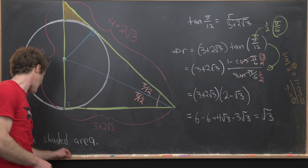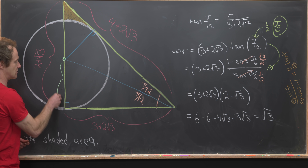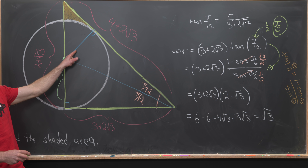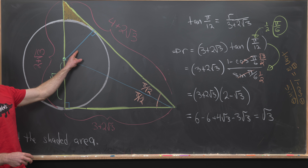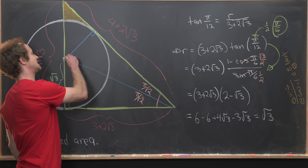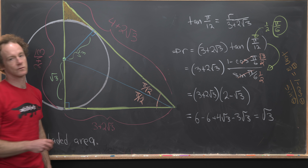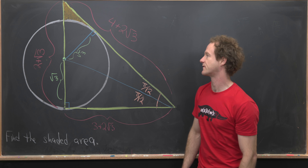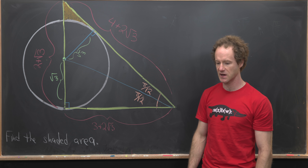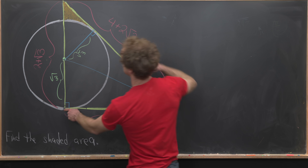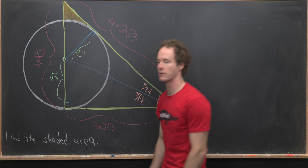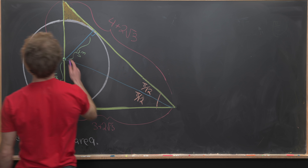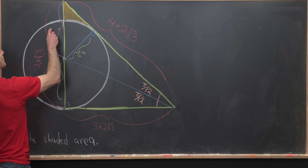So we've determined that the radius of the circle is the square root of 3. There are several radii visible in the picture, and all have length root 3. Now we can fill in more measurements: the full height is 2 plus root 3, and the sub-segment is root 3, so the remaining piece at the top is 2.